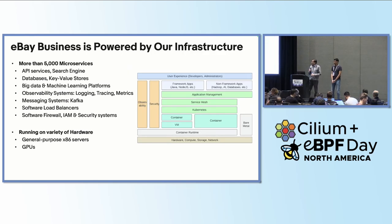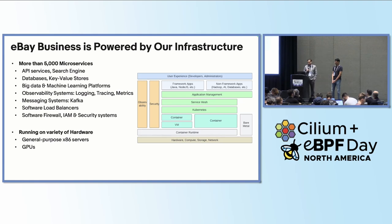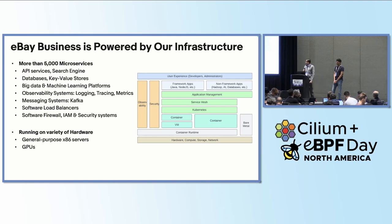So how is this business powered? It's powered by our infrastructure, which is comprised of more than 5,000 microservices. These range from a variety of stateless services, stateful services including databases and key-value stores. We have big data and machine learning platforms. We have our own scalable observability system built on open source technologies like Prometheus and OpenTelemetry. We also have our own software load balancers, software firewalls, and IAM systems. All these run on a variety of hardware — both x86 and GPUs. Most of our workloads run on Kubernetes with container runtime, and we also have workloads running on bare metals like appliances.